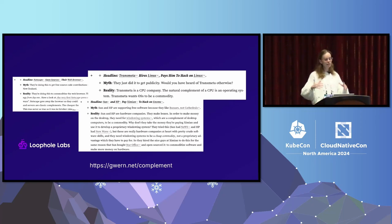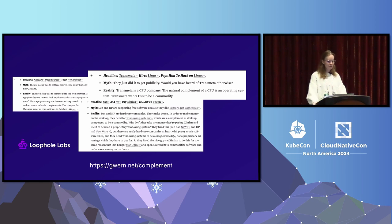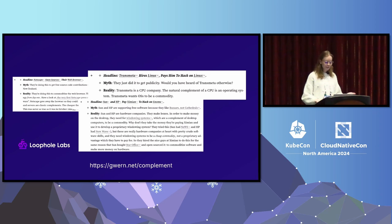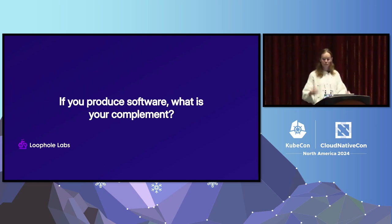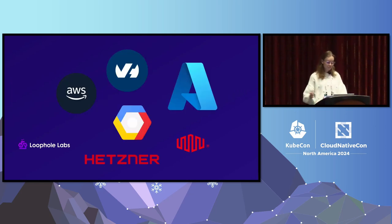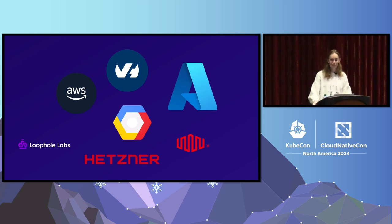Companies like Sun and HP paid for much of early Linux development because they sold desktop computers, and the complement to a computer is the operating system — you want that to be cheap, open source, commoditized, and transferable. So if you produce modern software, what is your complement today?